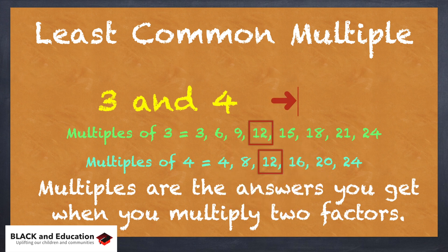That's the least common multiple that they have in common. So they may have others in common, like they have 24, but 12 is the least one that they have in common.